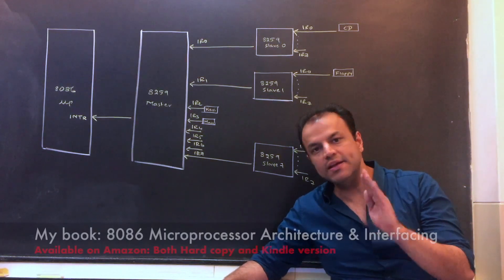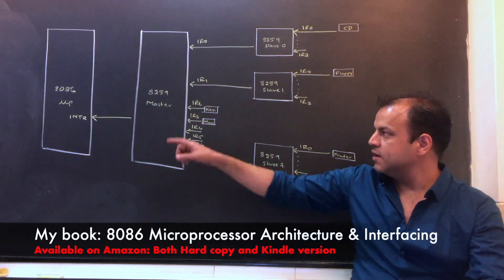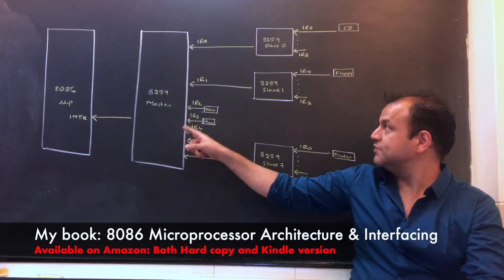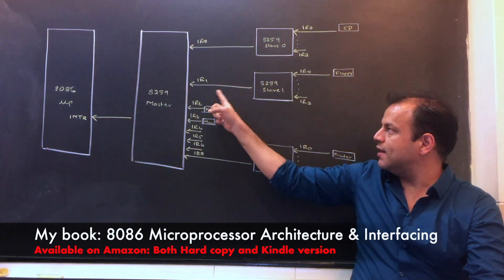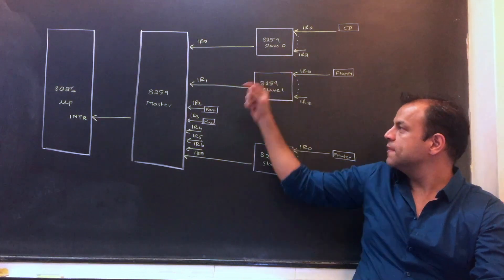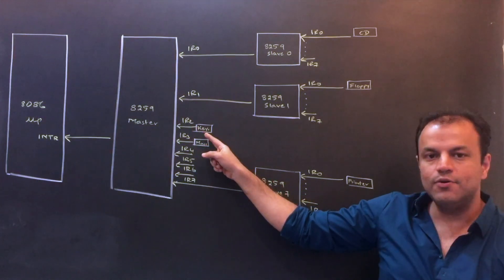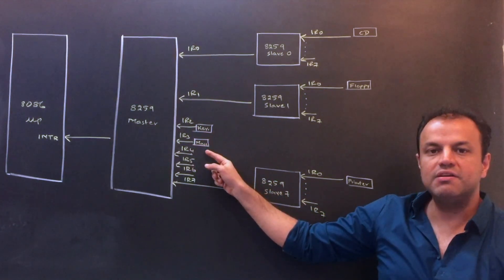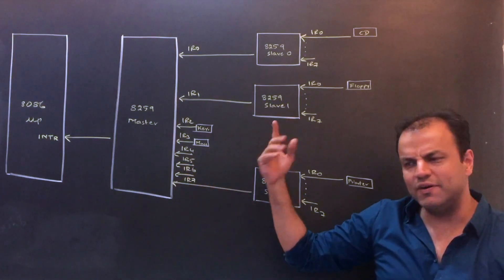It doesn't always have to be nine 8259s. So let's look at this diagram. That's your CPU. That's the master. On this master, at IR-0, IR-1, and IR-7, I have put in a slave. On IR-2 of the master there is an ordinary device like a keyboard. On IR-3 there is an ordinary device like a mouse. IR-4, 5, 6 are free right now.